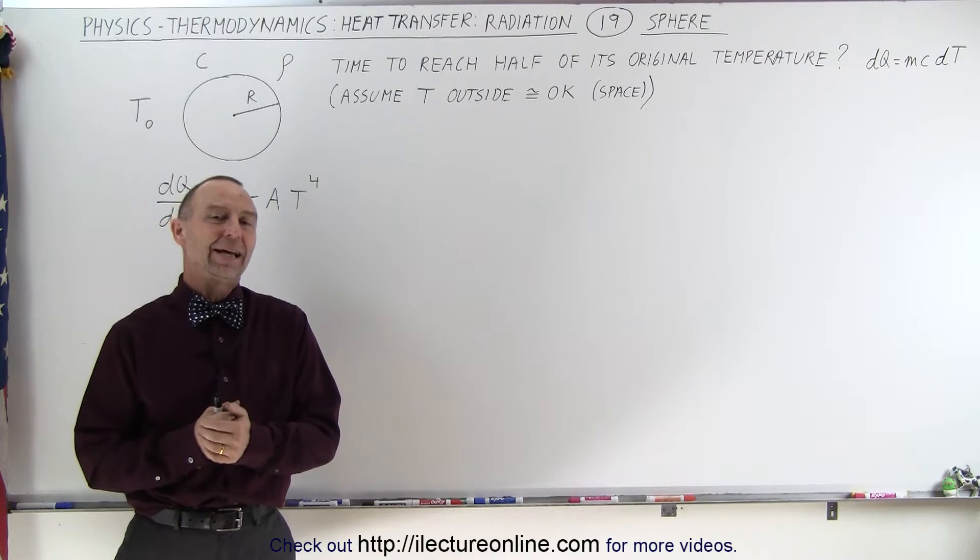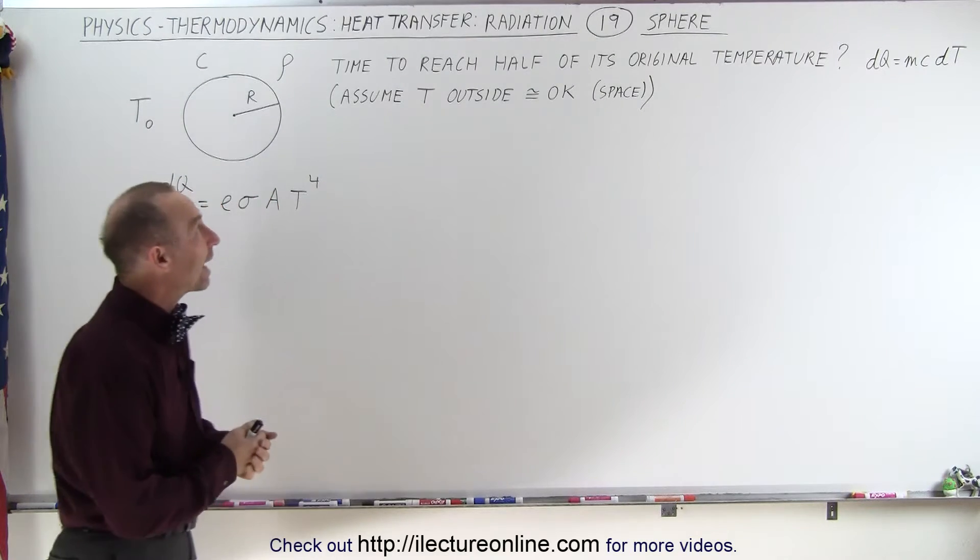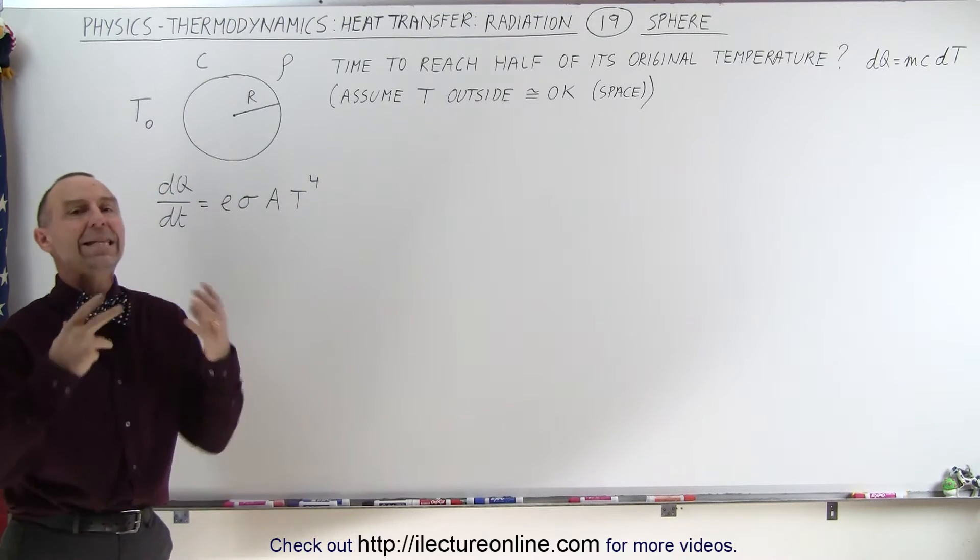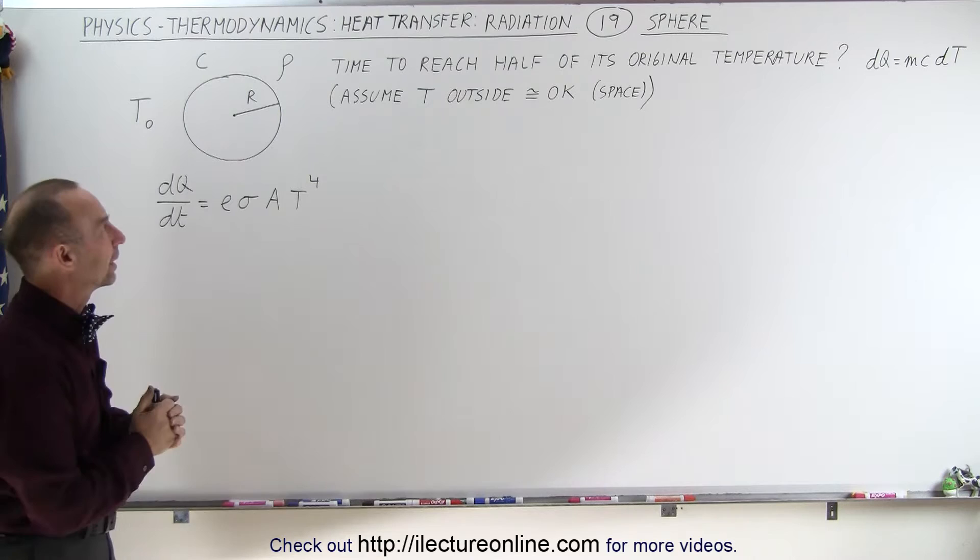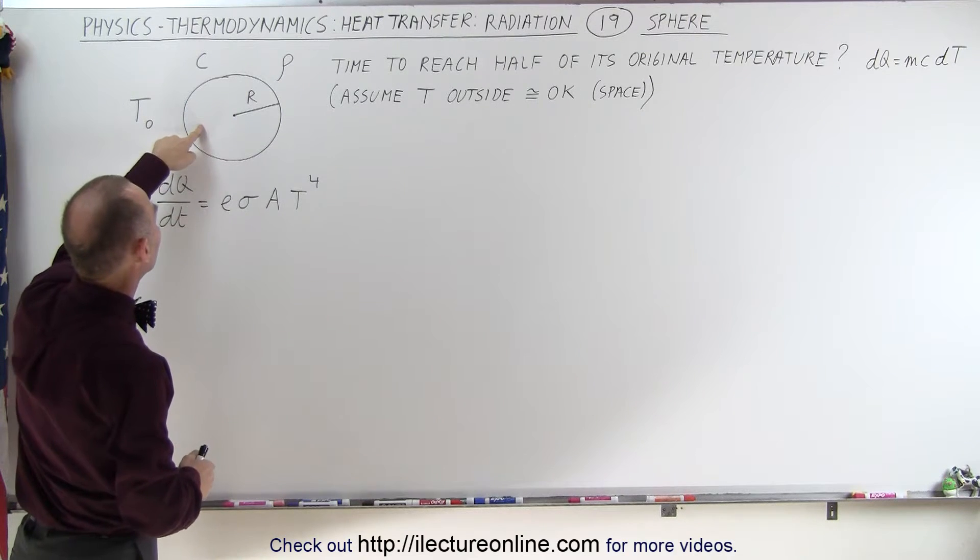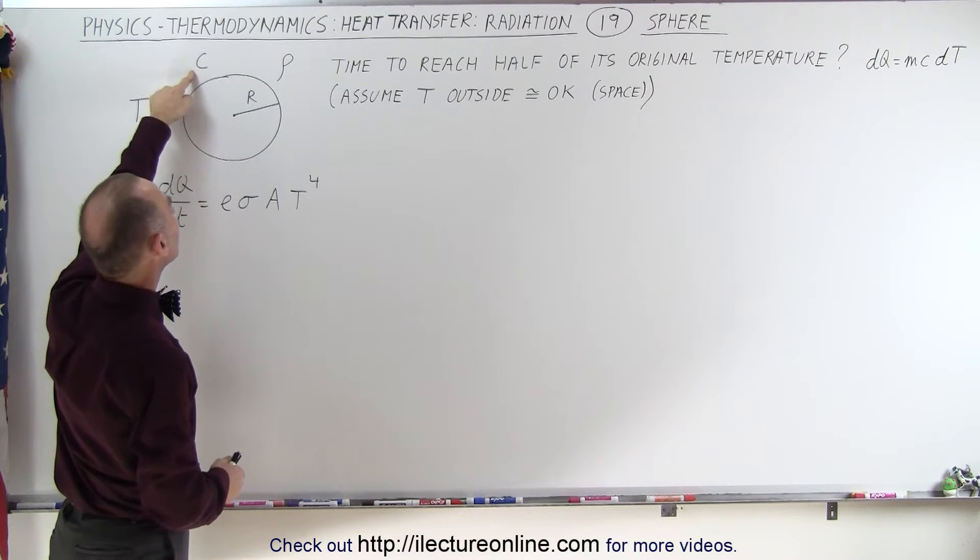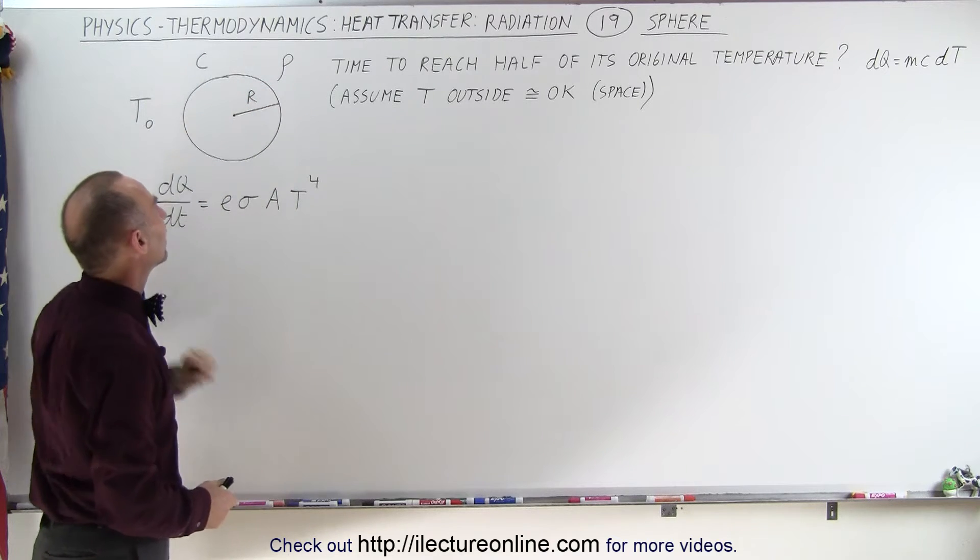Welcome to our lecture online. In this example we're going to have a sphere that's radiating heat rather than heat being transferred across a conducting path. We have a sphere that has a certain amount of mass, specific heat C, density rho, and radius R.